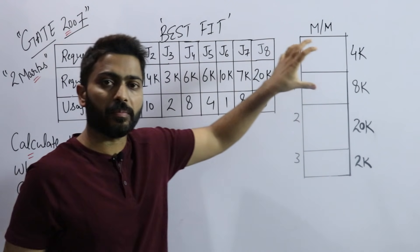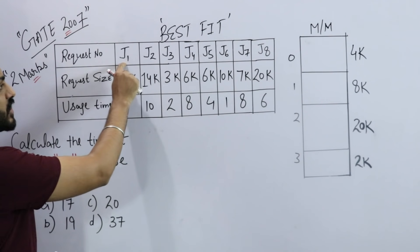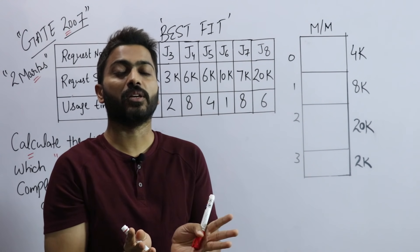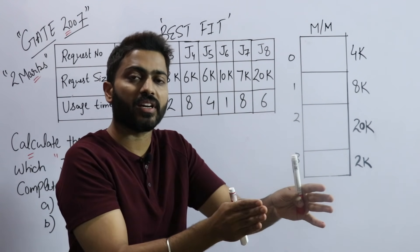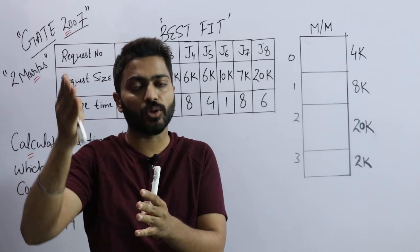Let's solve it one by one. The algorithm given is best fit, so we have to allocate the processes or jobs according to best fit. The requests J1 to J8 should be fulfilled sequentially - we have to do them in sequence. You cannot randomly choose any job.